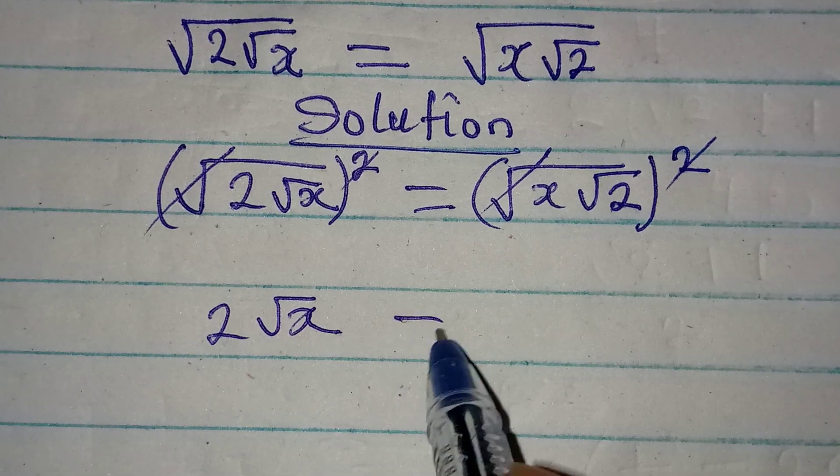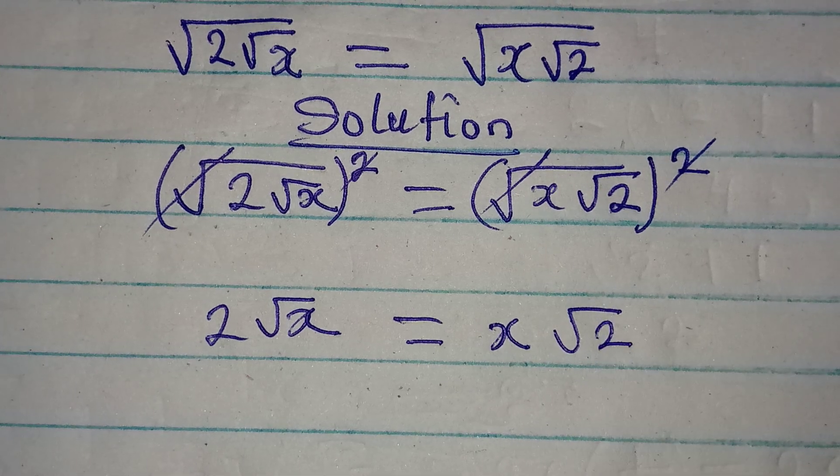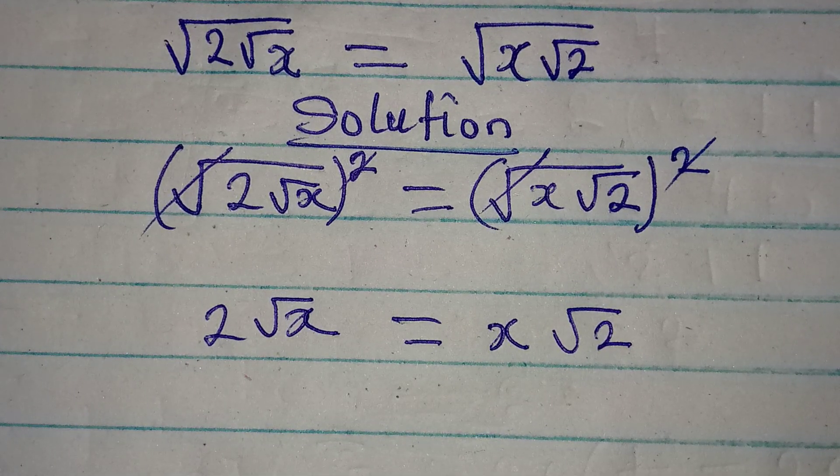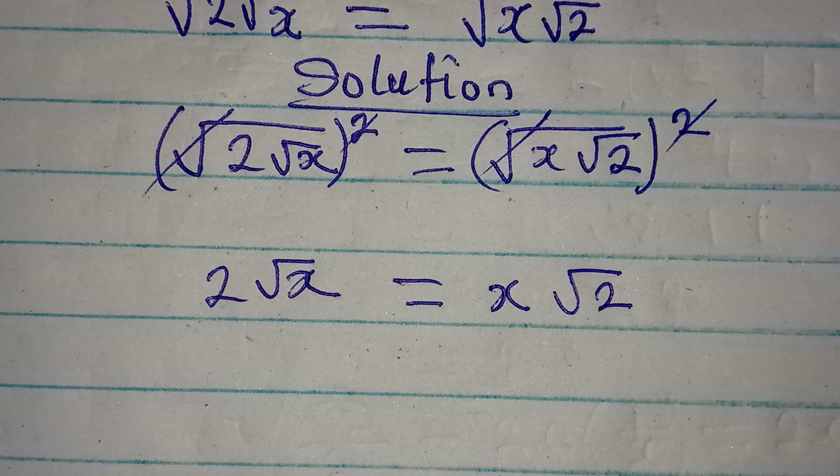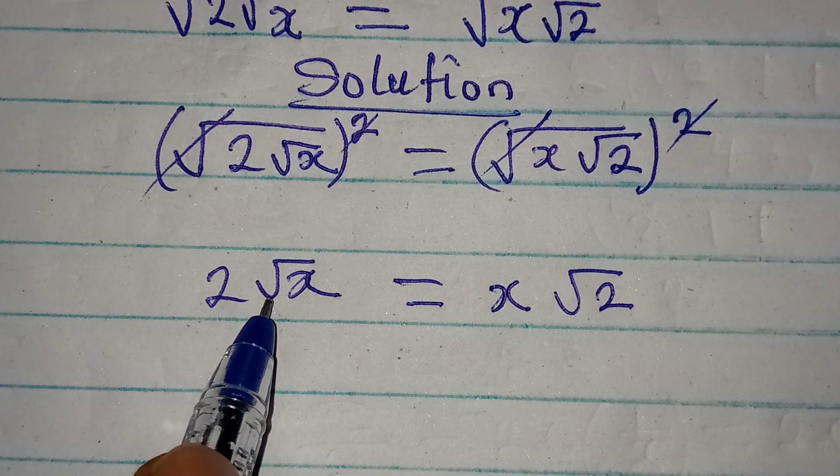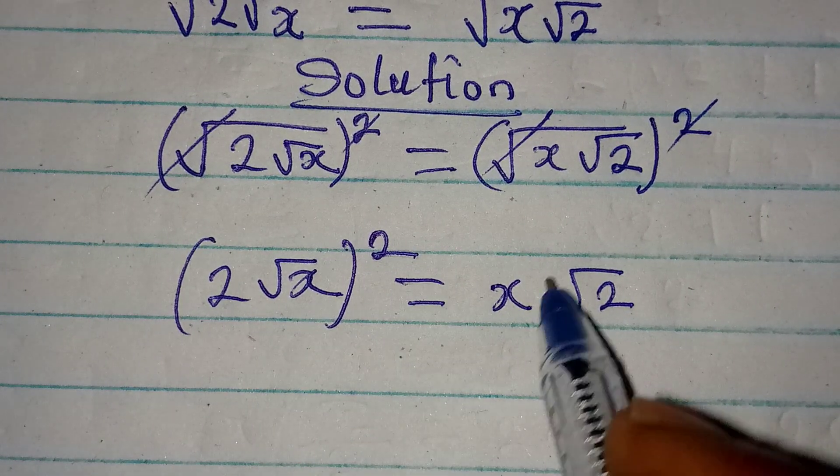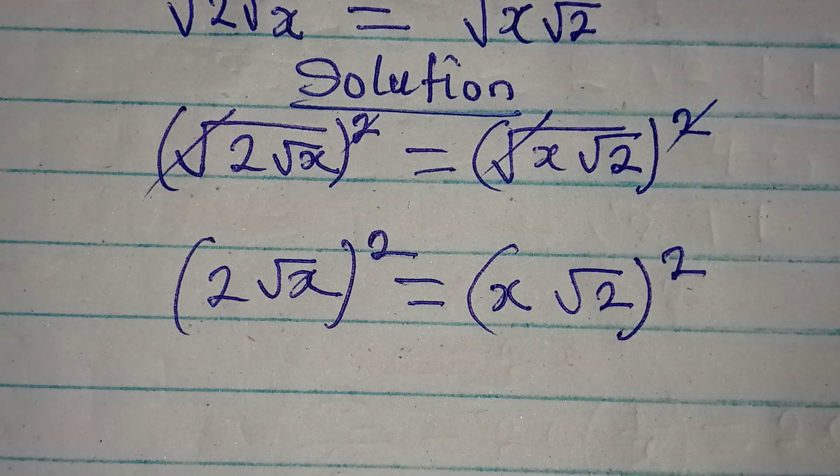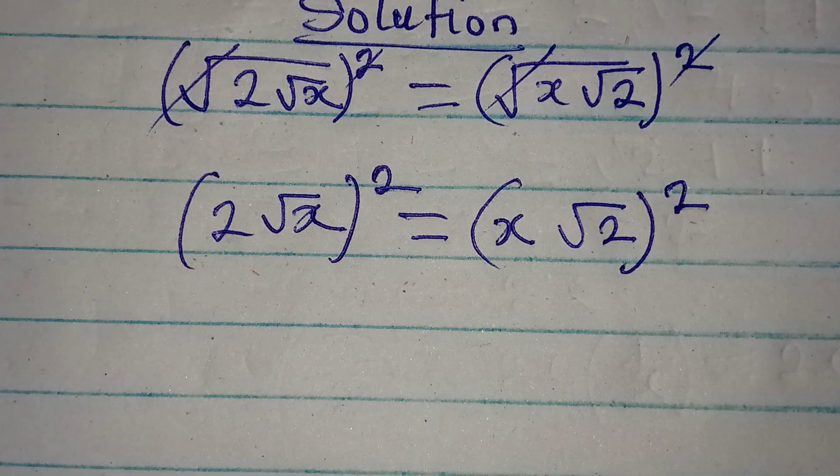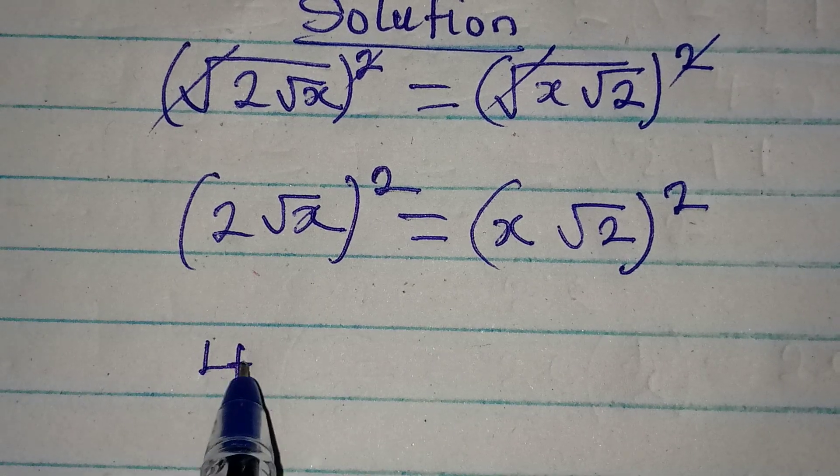Now let's continue from here. The next thing we're going to do is removing this square root from here, so we're going to square this as well and then the whole of this would also be squared. From here, two squared will give us 4.